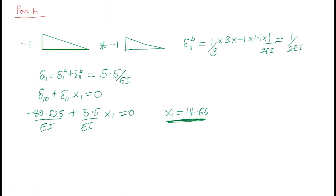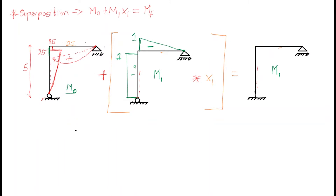To draw the moment diagram, the next step is to use superposition. We are going to superimpose M0 plus M1 times x1 to obtain the final moment diagram. What I'm doing is adding M0 to M1 times x1, which gives the final moment diagram M of the statically indeterminate structure — not the primary structure, but the actual structure given in the question.